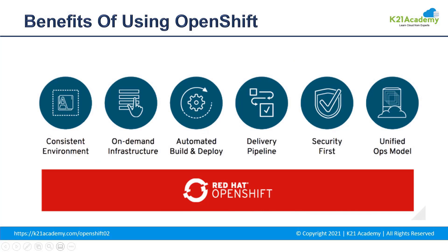The benefits of using OpenShift include a very consistent environment that is automated, built, and deployed. The delivery pipeline is very concise, it is highly secure, and it is a unified operations model. The most important part is that it is on-demand infrastructure. All in all, it is very easy to use and migrate things to the cloud.